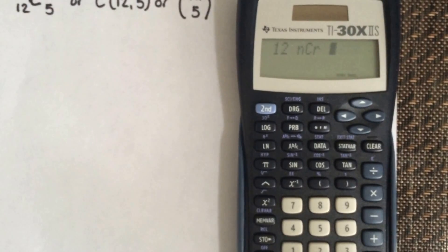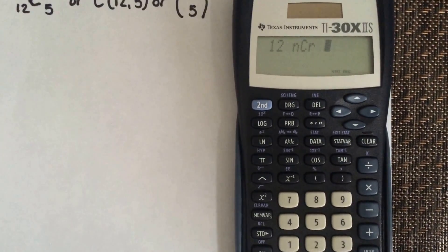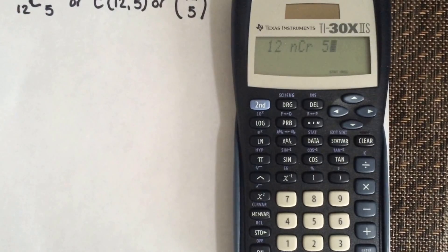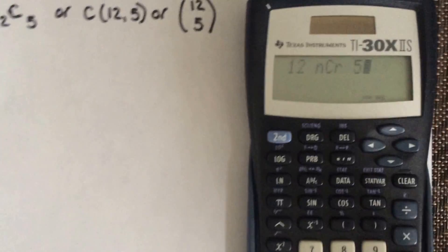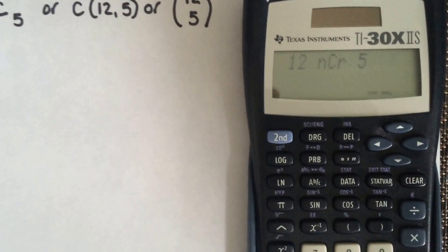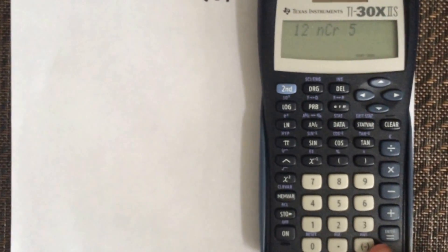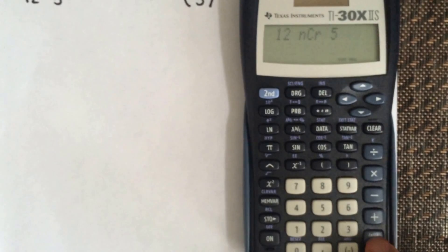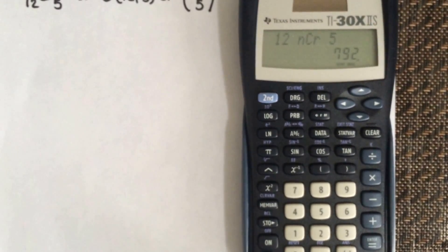And then you're going to select how many you're selecting. So in our case, we're selecting 5, so hit 5. You should see this on your screen: 12 NCR 5. Then hit enter and you'll see 795.